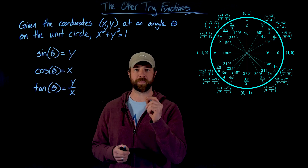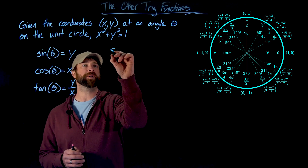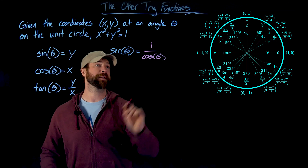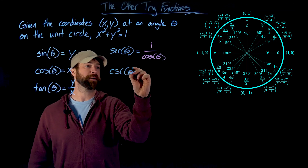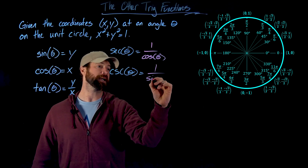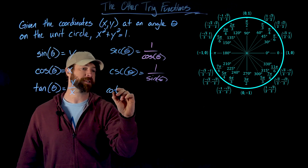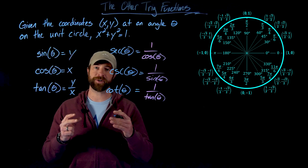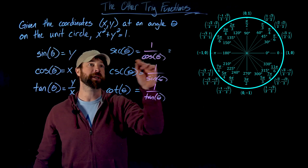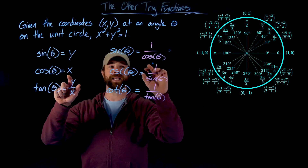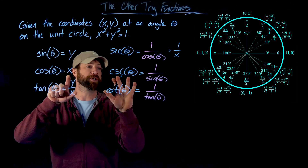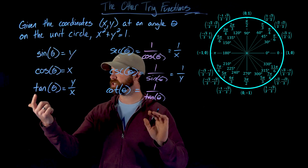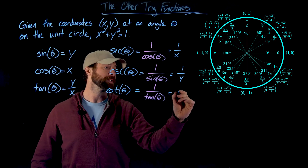We can use the reciprocal identities. Specifically, the secant of theta equals 1 over cosine of theta, the cosecant of theta equals 1 over sine of theta, and the cotangent of theta equals 1 over tangent of theta. In the context of the unit circle, since cosine is the x value, secant is 1 over x. Since sine is y, cosecant is 1 over y. And cotangent is 1 over tangent, which is 1 over (y/x), giving us x over y.